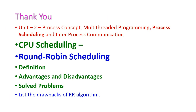Up to this point we have seen the round robin scheduling algorithm. In this class we covered the definition, advantages, and disadvantages of the RR algorithm, and solved two problems. Now it is question time — students, please write the drawbacks of the round robin algorithm in the comment box. In the next class, we will see another important scheduling algorithm from the second unit. Thank you.